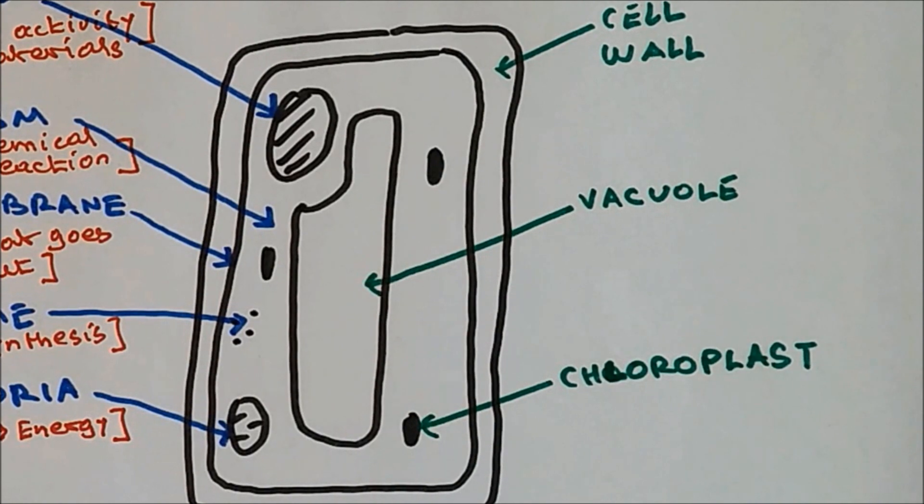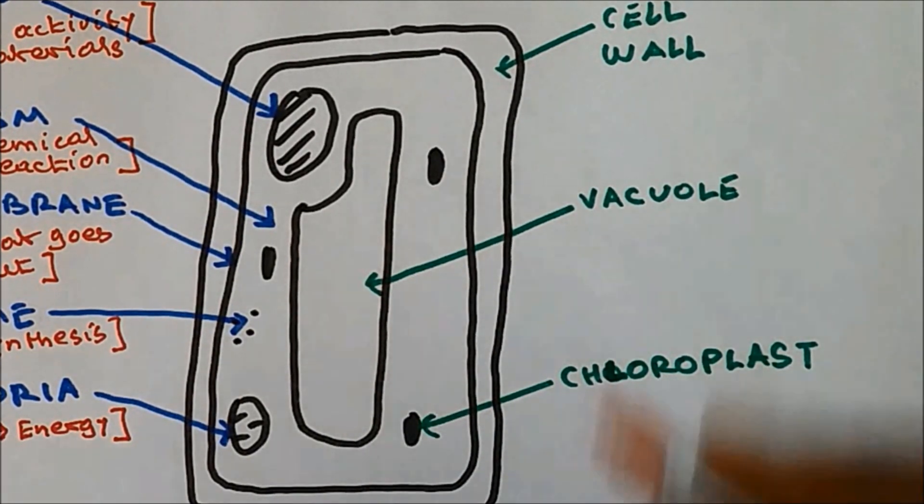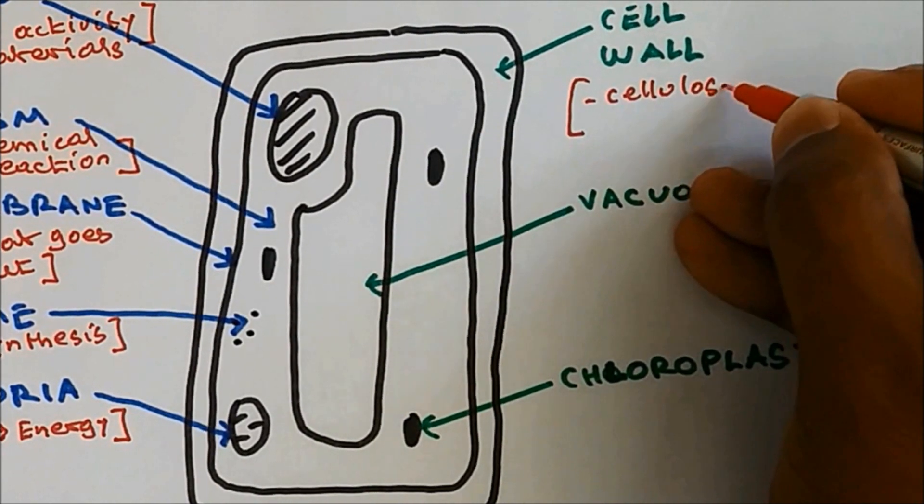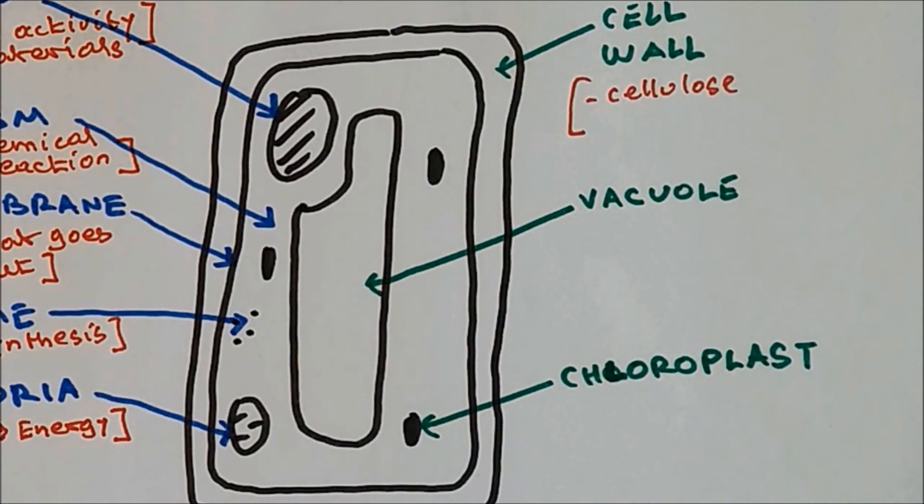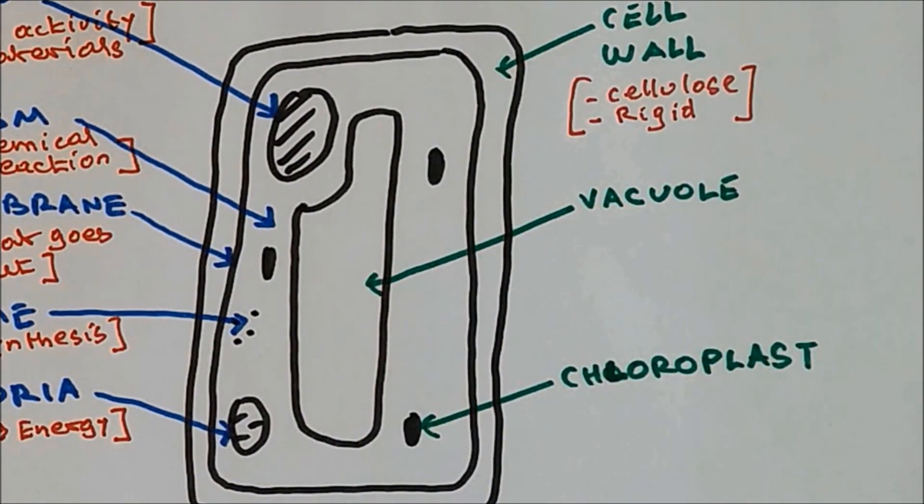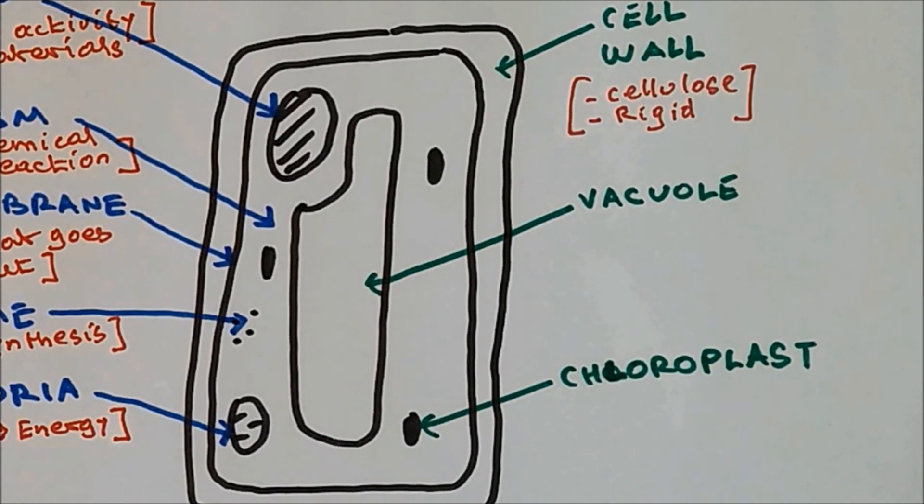Okay, let's take a look at the function of cell wall. Cell wall contains cellulose. That's not the main function, but you need to learn that it contains cellulose. And the main function of cell wall is to keep the cell rigid. So therefore, it keeps the shape of the cell.